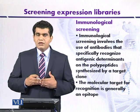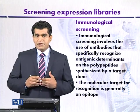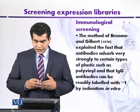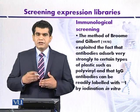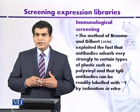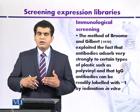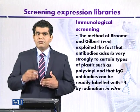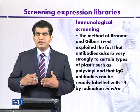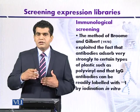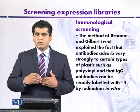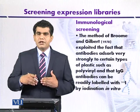Immunological techniques were used in the late 1970s to detect expressed products. This method was first used by scientists Broome and Gilbert in 1978, who explained the immunological screening of expressed protein products. Their strategy was based on the fact that target proteins can bind with plastic materials like polyvinyl, and after polyvinyl binding, the polyvinyl sheets can be used to detect the target protein using a secondary antibody.